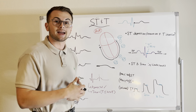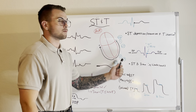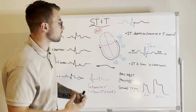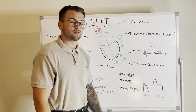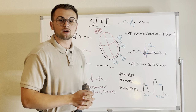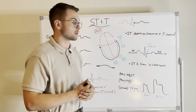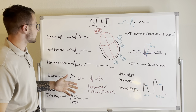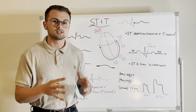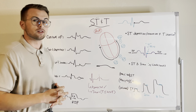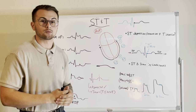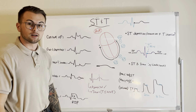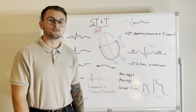To recap: a good T wave should be asymmetrical, upright in leads 1, 2, and V3 through V6, and small — less than two thirds the height of the R wave. We want sharp J points. Always evaluate ST elevation further, as it can be associated with ischemia, injury, or infarction. Compare ST segments and T waves across all leads — this could help you catch a STEMI, non-STEMI, massive infarction, or ventricular aneurysm.